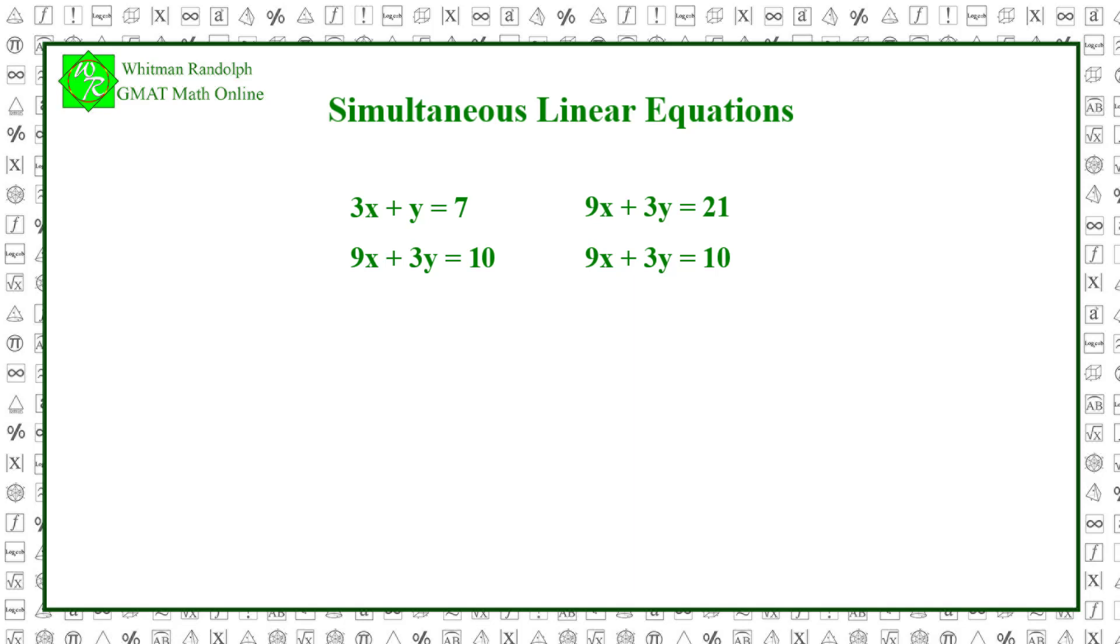An interpretation of these equations in coordinate geometry illustrates why there is no solution. If we graph both equations on the coordinate plane, we'll get two parallel lines. They don't have a common solution because the two lines never intersect.